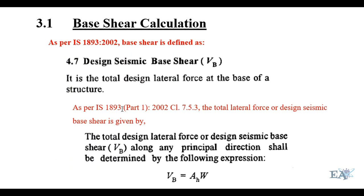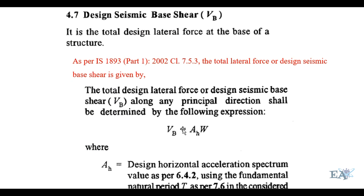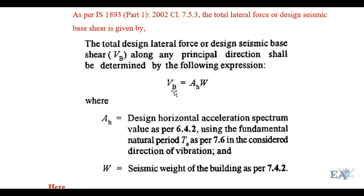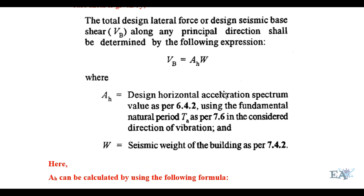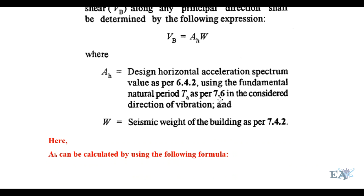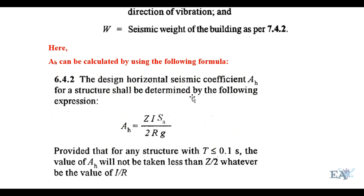As per IS 1893 Part 1:2002, Clause 7.5.3, the total lateral force or the design seismic base shear is given by the formula: VB = AH × W, where W is the seismic weight of the building. I have made a previous video on how to calculate the seismic weight — you can watch that. AH is the design horizontal acceleration spectrum.